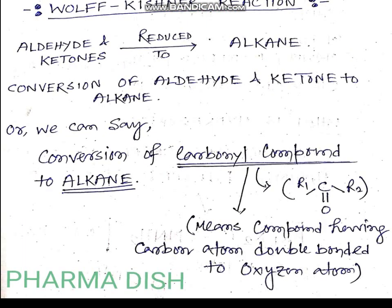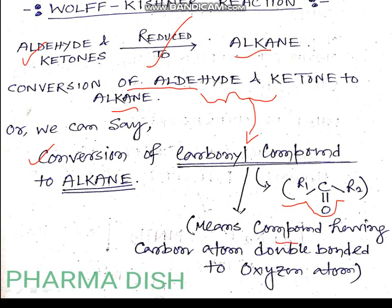So what is the Wolff-Kishner reaction? This is the conversion of aldehydes and ketones to alkanes. The Wolff-Kishner reaction is a reduction reaction where aldehydes and ketones are reduced to alkanes. These aldehydes and ketones are carbonyl compounds — compounds having a carbon atom double-bonded to an oxygen atom, represented as R1–C=O–R2. Both aldehydes and ketones come under carbonyl compounds.